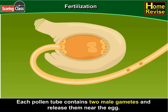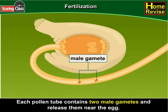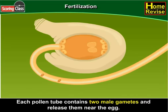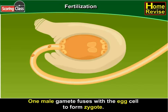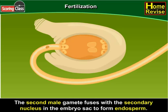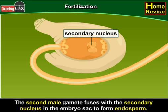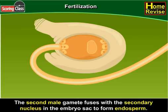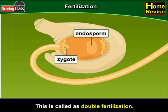Each pollen tube contains two male gametes and releases them near the egg. One male gamete fuses with the egg cell to form a zygote. The second male gamete fuses with the secondary nucleus in the embryo sac to form endosperm. This is called double fertilization.